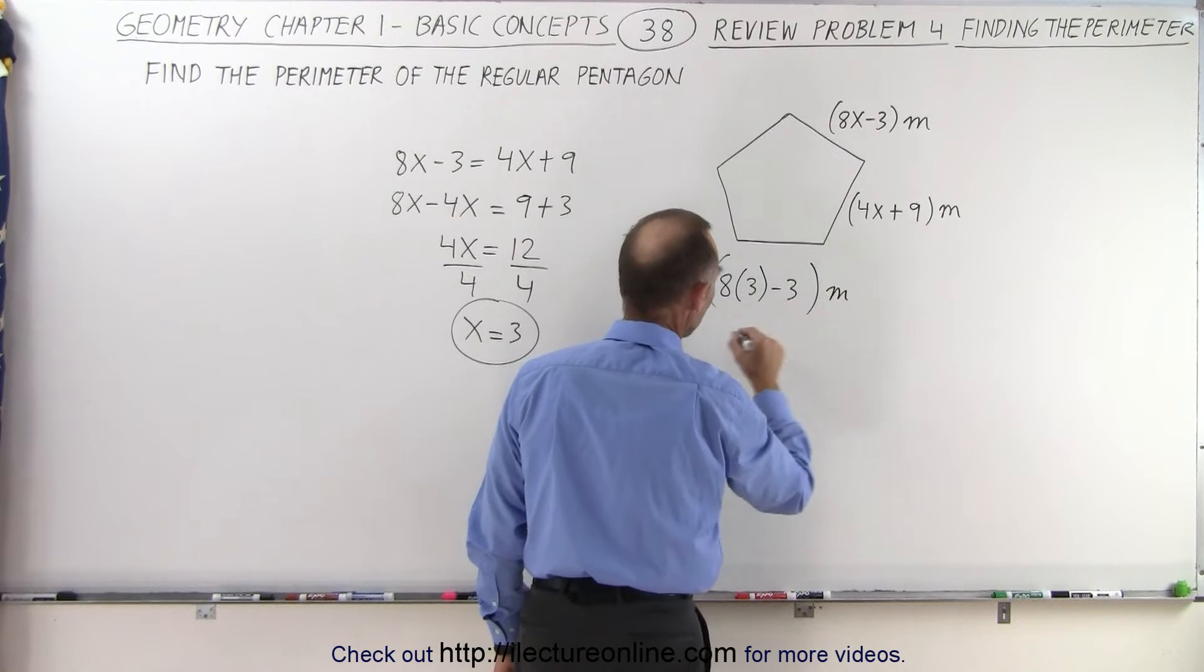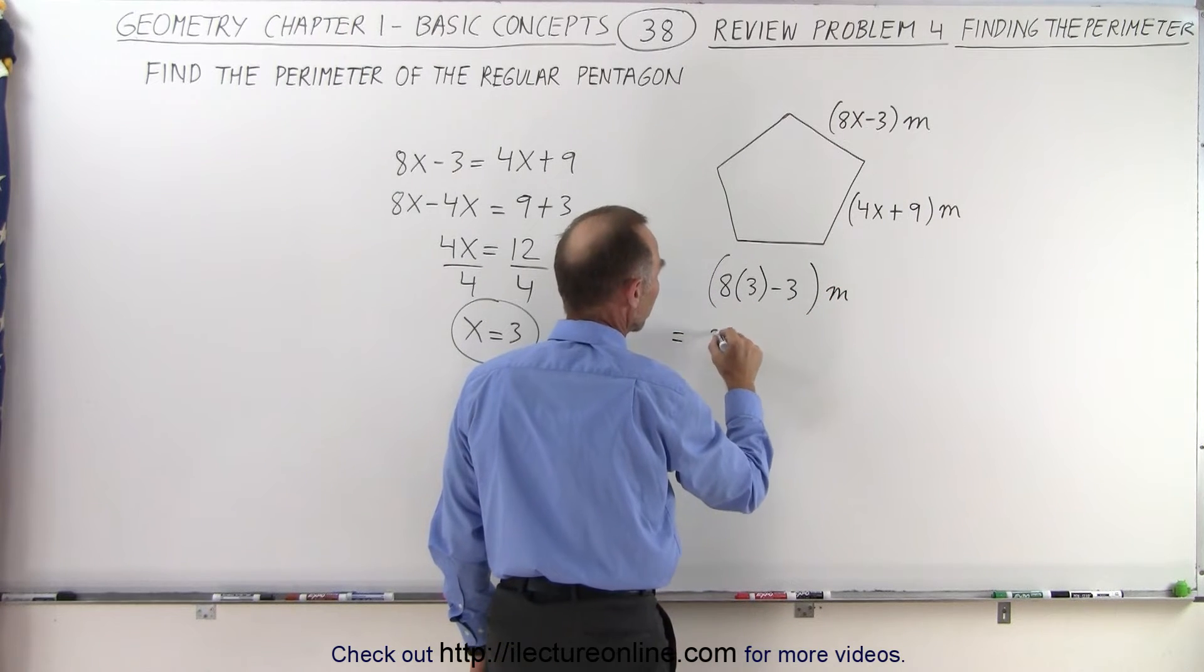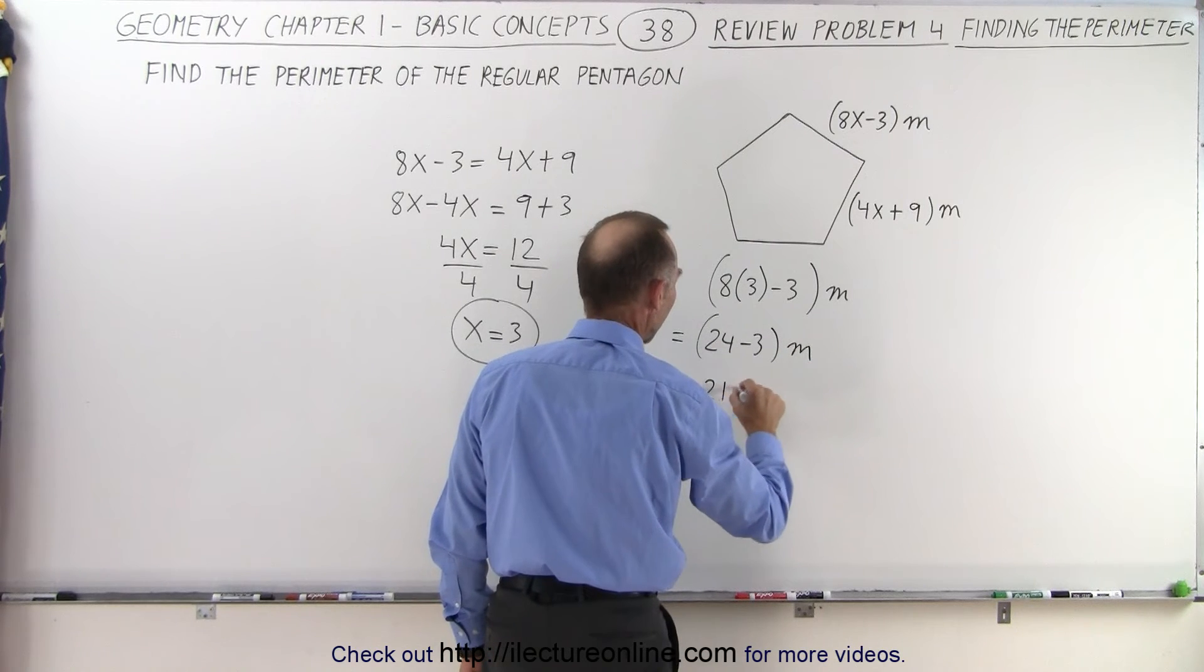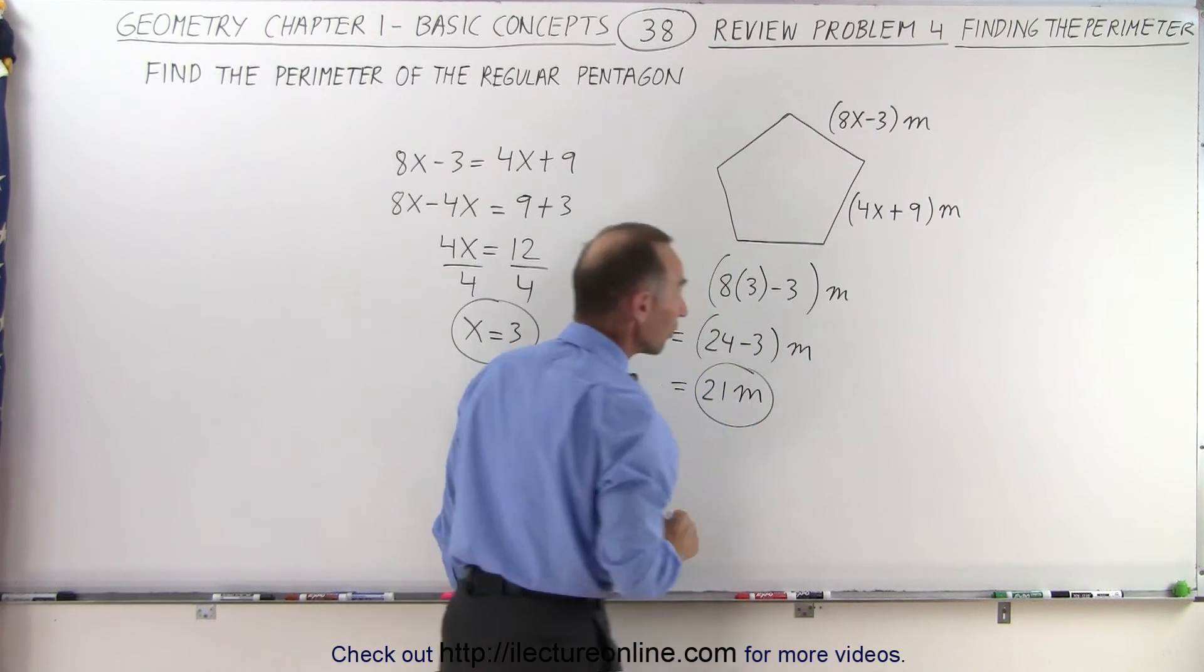This equals 24 minus 3 meters, so each side has a length of 21 meters.